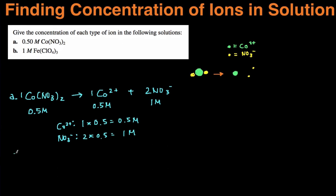All right, let's do the second example. So in part B, we want to find the concentration of iron and the concentration of perchlorate in this solution.